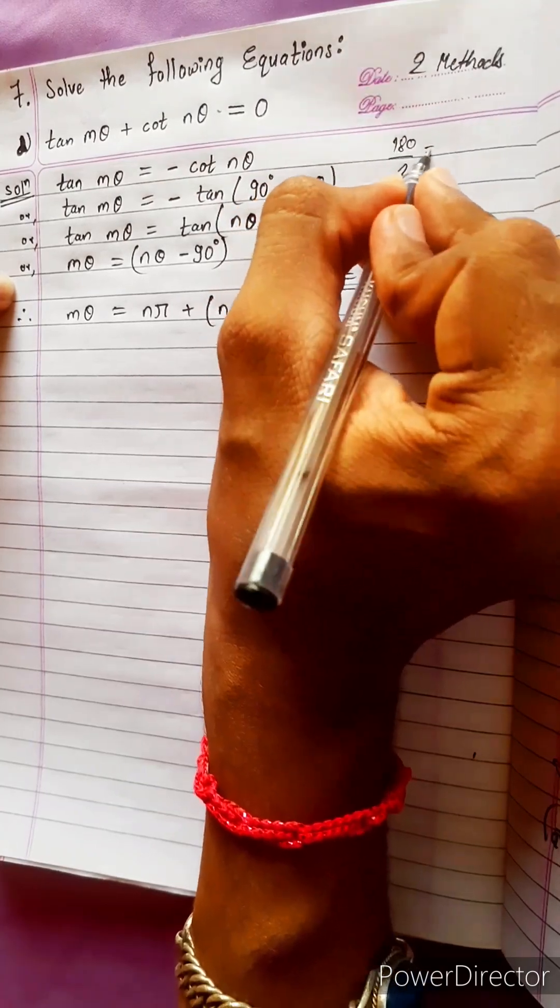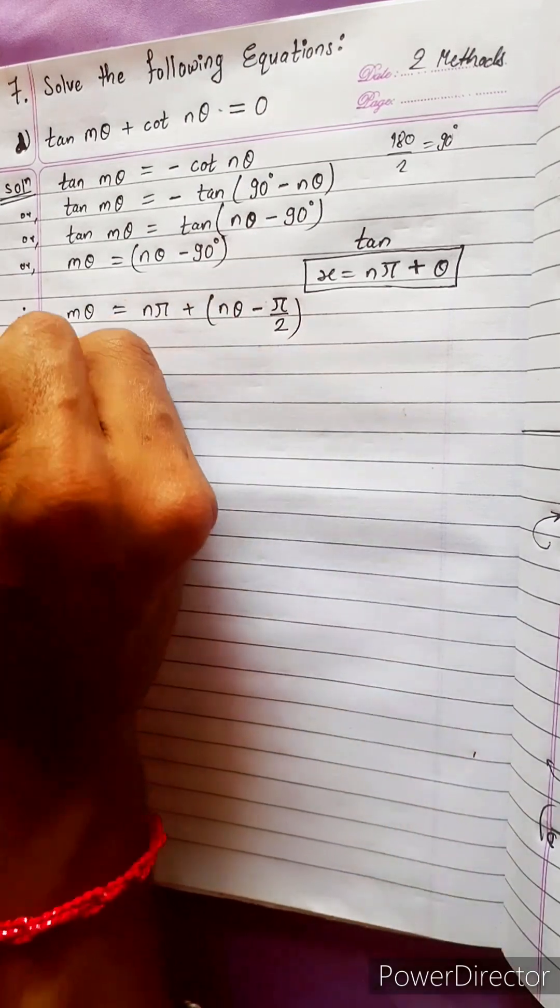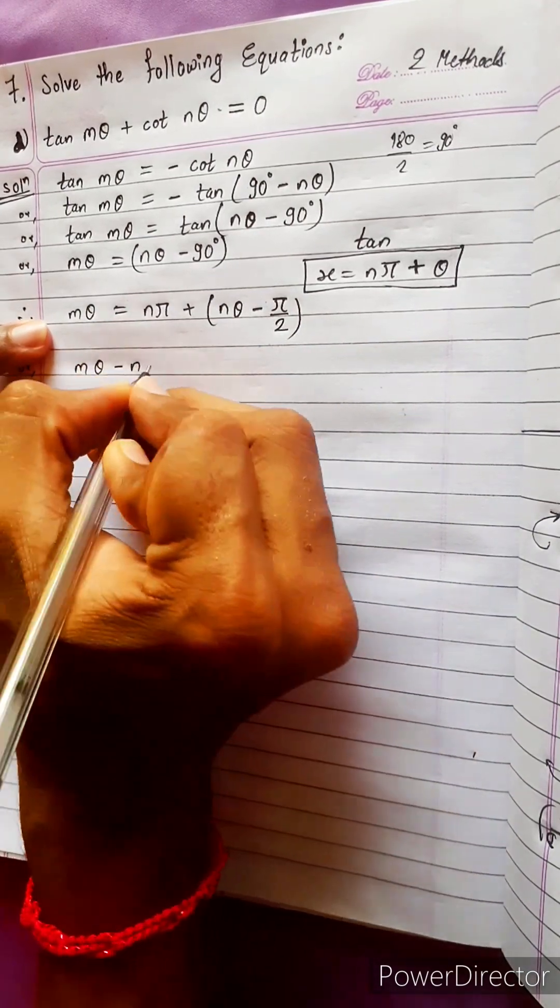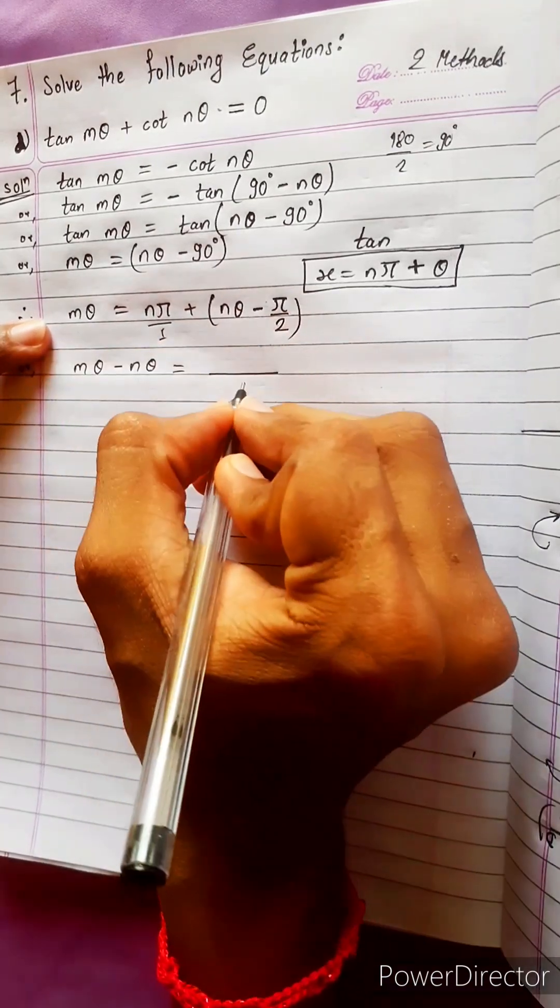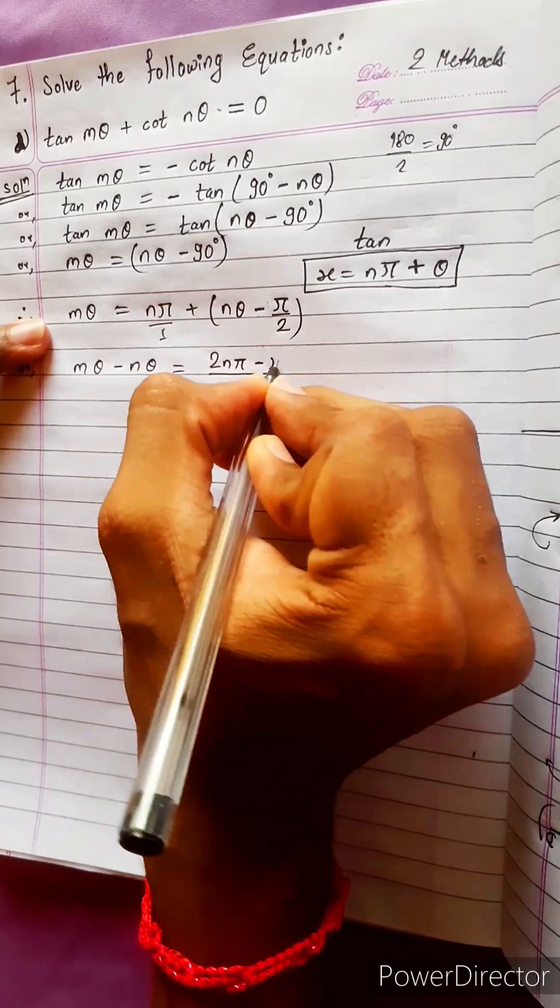Now can we do anything? This n theta take to another side. Let's see what happens. M theta minus n theta equals to - and here is 1. Take LCM 2. 2n pi minus pi.